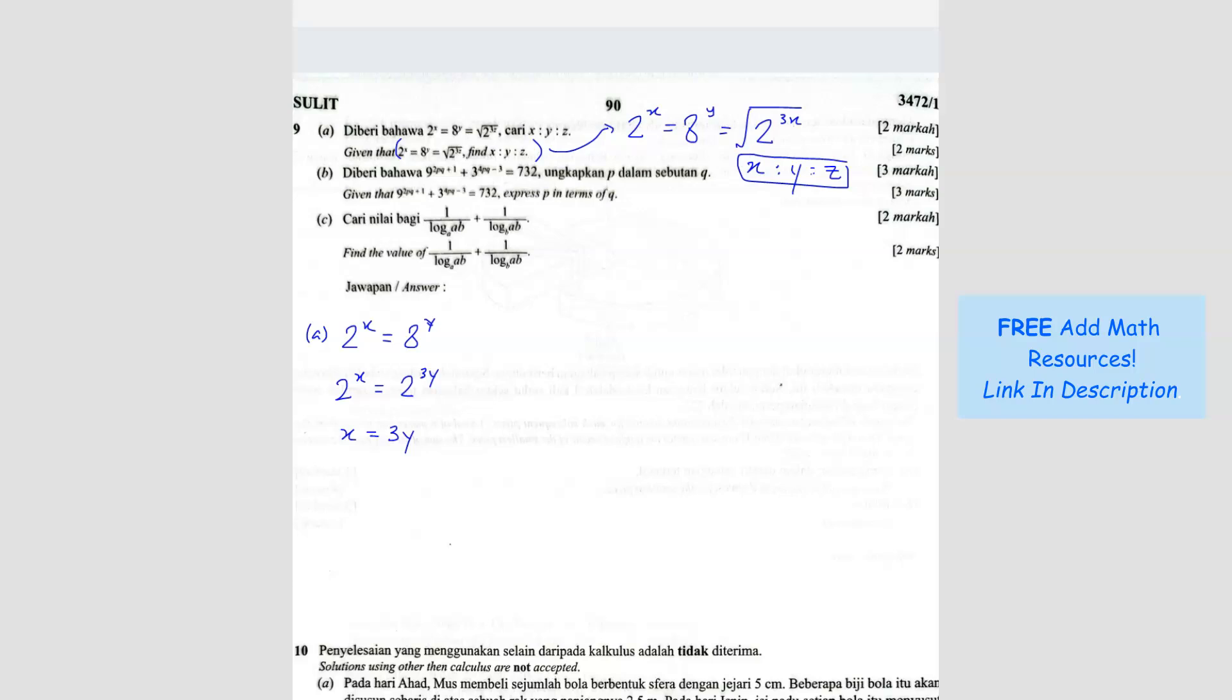So we can already form a ratio here. x over y equals 3 over 1. So the ratio is x to y, 3 to 1. This is the first ratio that we can form.